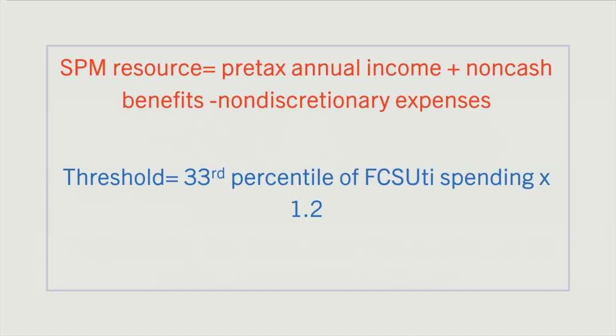Two families could have identical incomes, but one could receive government benefits and the other could not. By the OPM standard, the families are experiencing the same level of poverty. According to the SPM, on the other hand, the one with the government benefits is considered to be doing better than the one without.